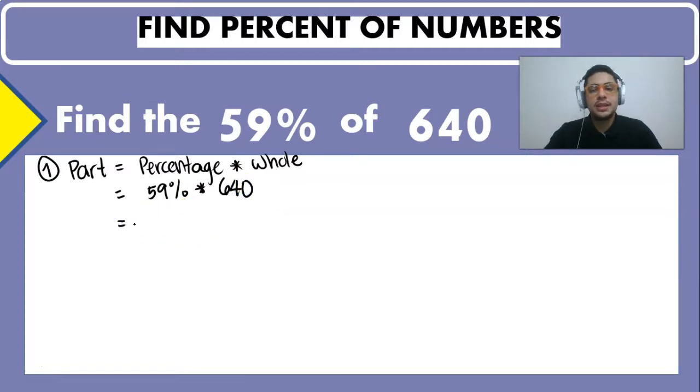So in order to find out the 59% of 640 we have to remember that 59% is the same as 59 divided by a hundred and that multiplied by 640.